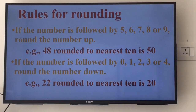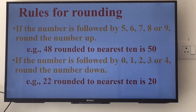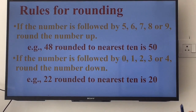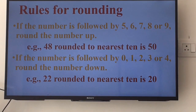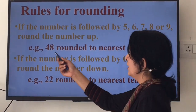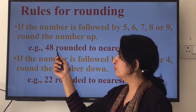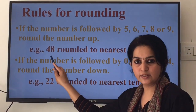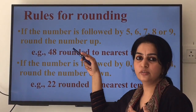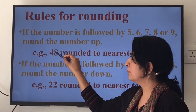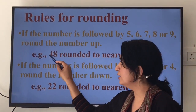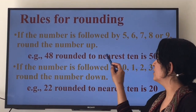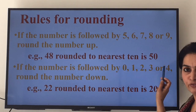Let us learn the rules for rounding. If the number is followed by 5, 6, 7, 8, or 9, round the number up. For example, 48 — we are going to round 48 to the nearest 10. The digit in the ones place is 8, which is greater than 5. So we replace this 8 by 0 and add 1 to 4. So 48 rounded to the nearest 10 is 50.